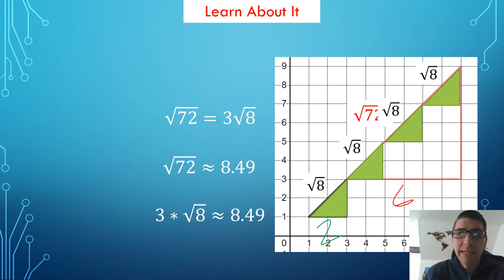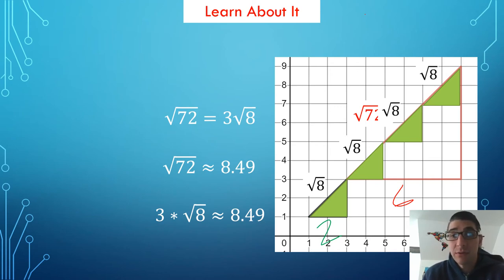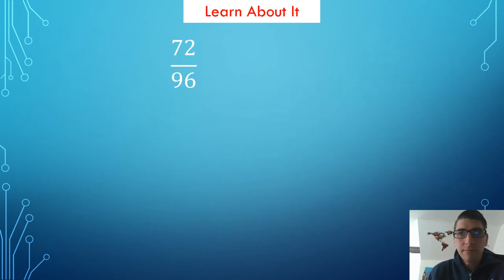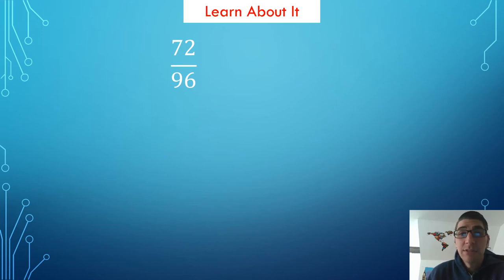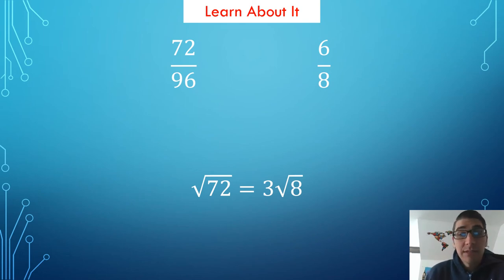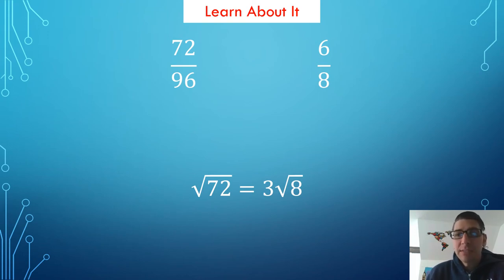This is very similar to having multiple ways to write the same fraction — for instance, one-half and four-eighths are the same number, just represented slightly differently. The square root of 72 and 3 times the square root of 8 are really the same number, just written differently. This process of finding equivalent square root expressions is similar to simplifying fractions. We have 72 over 96 — both divisible by 12 — so an equivalent fraction is 6 eighths. Similarly, the square root of 72 equals 3 times the square root of 8. Those radical expressions are equivalent even though they look different, and the picture helps us make that connection.